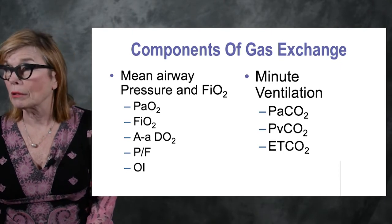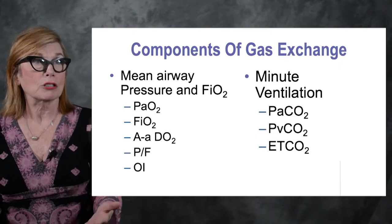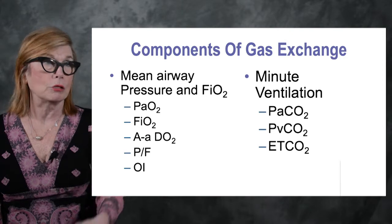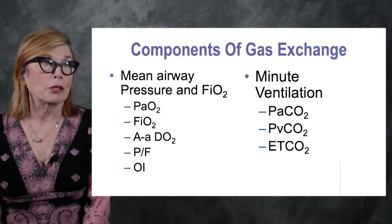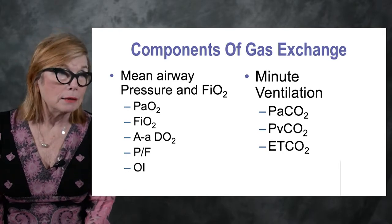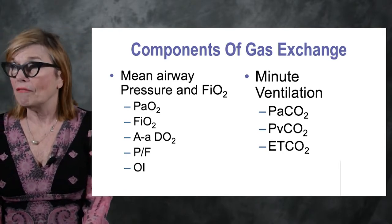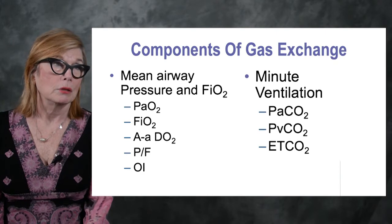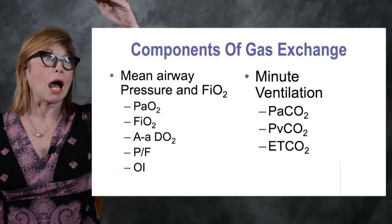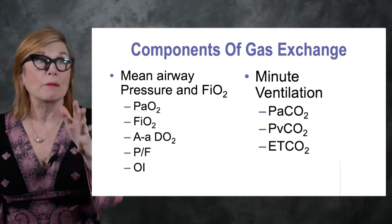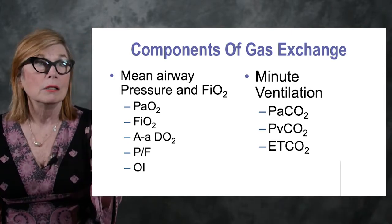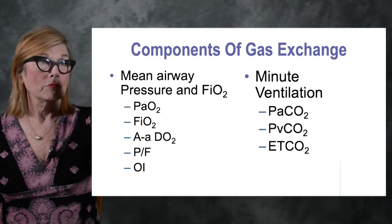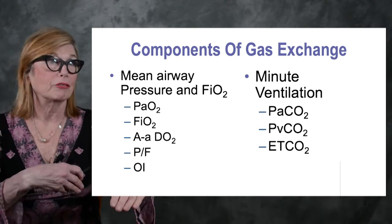Many critically ill intubated and ventilated patients will have end-tidal CO2 displayed on their bedside monitor. A patient with an end-tidal CO2 of 28 and an arterial CO2 of 54 is not clearing CO2 — the end-tidal is low when it should be high because arterial CO2 is high. If the problem were ventilation, end-tidal would be high and arterial would be high. But when the problem is perfusion, end-tidal is low because blood isn't flowing past the alveoli.